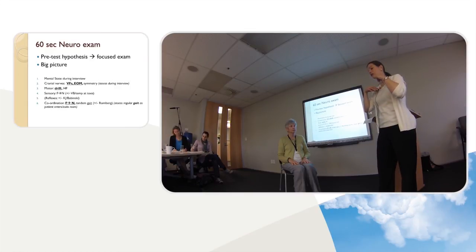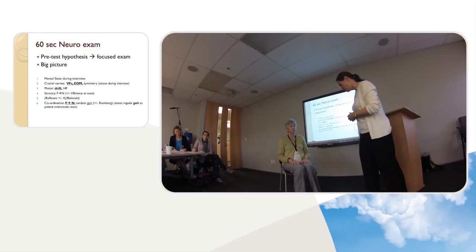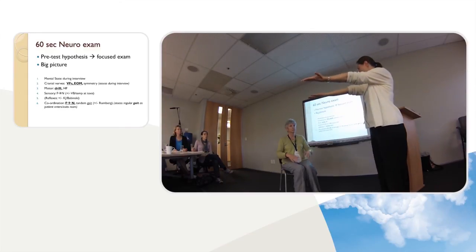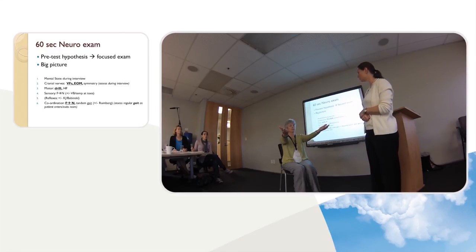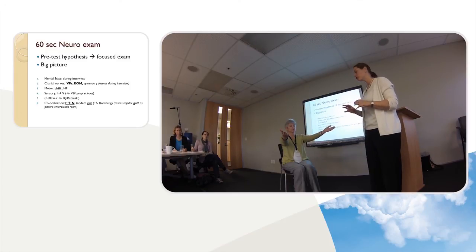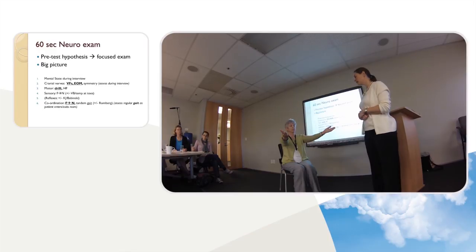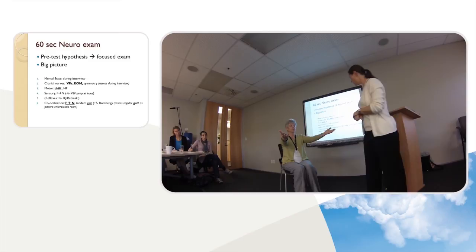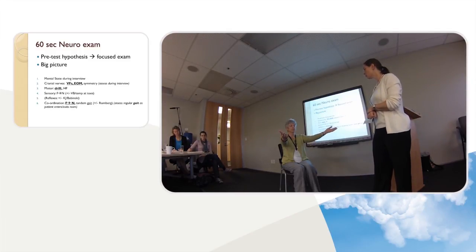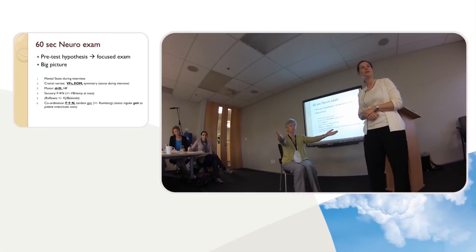For sensory examination: stretch out your arms like this, close your eyes. Now take this finger and touch the tip of your nose. Stretch it back out. You can vary it — touch this finger, take that finger and touch the tip of your nose, stretch it back out. That gives you sensation in both limbs and finger-to-nose. Or: touch your nose with that finger, stretch it back out, and do the same thing with the other hand.